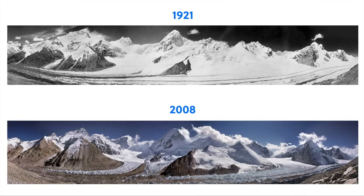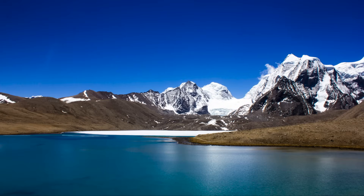We're seeing this happen all over the entire planet. As the ice melts, it adds fresh water to the oceans, causing sea level to rise, which is further complicating our complex atmospheric weather conditions and how climate works as a whole. It's something that scientists are exploring and trying to figure out a solution for as we speak.